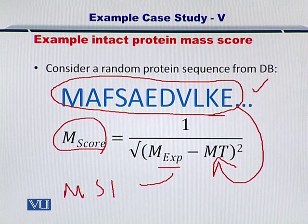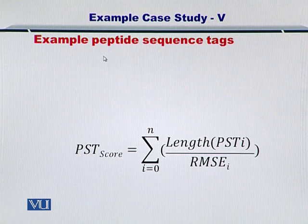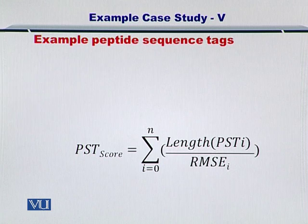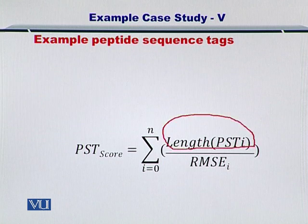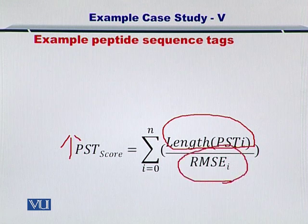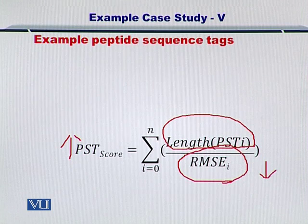Second step would include the peptide sequence tag score. In the peptide sequence tag score, if you are obtaining longer peptide sequence tags, then your score goes up. However, if the RMSE or the root mean squared error of generating these peptide sequence tags is large, then the score should go down, so therefore it is in the denominator.